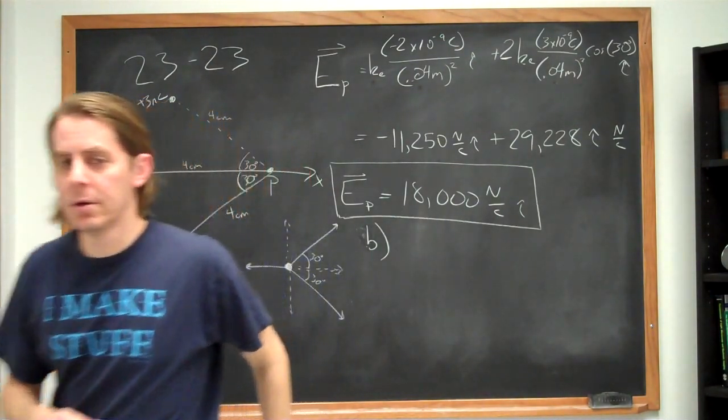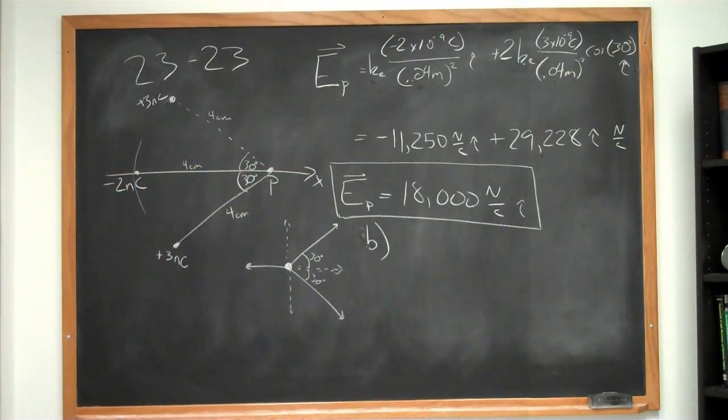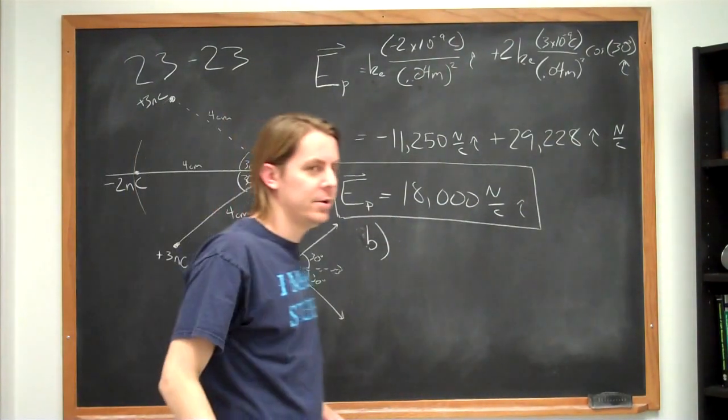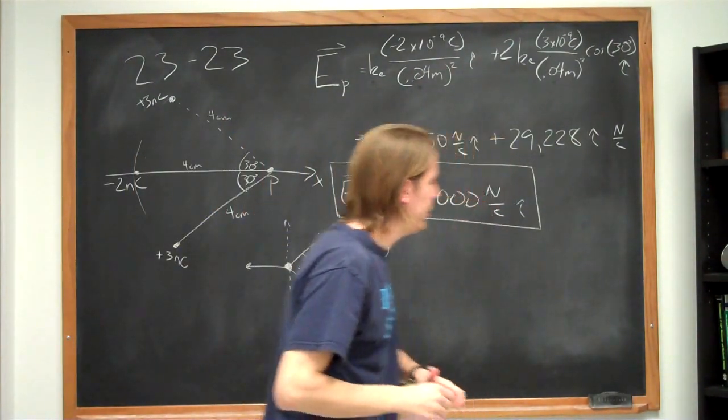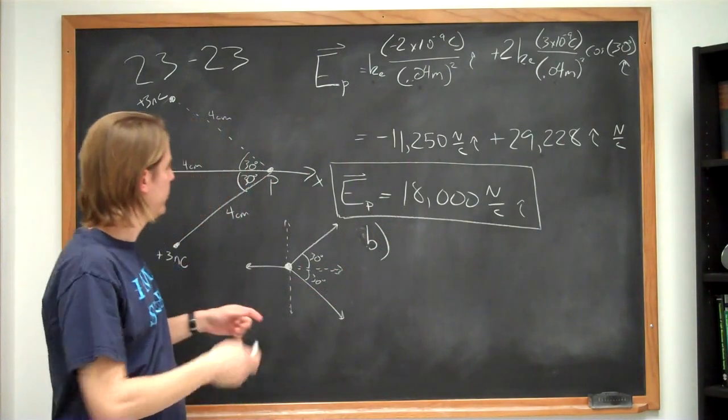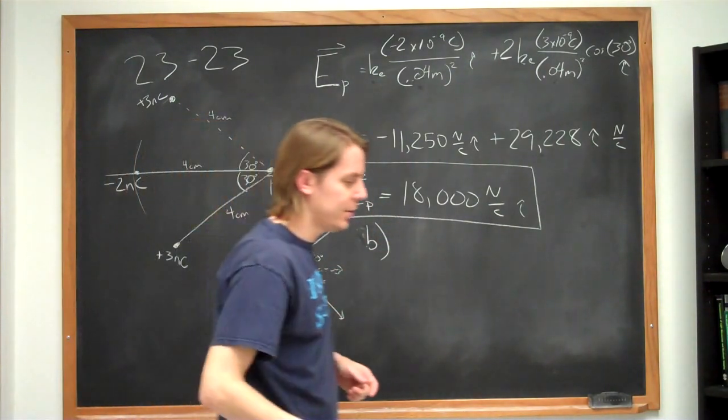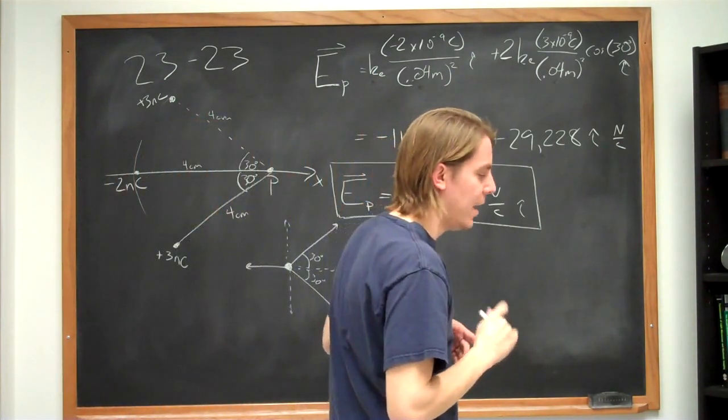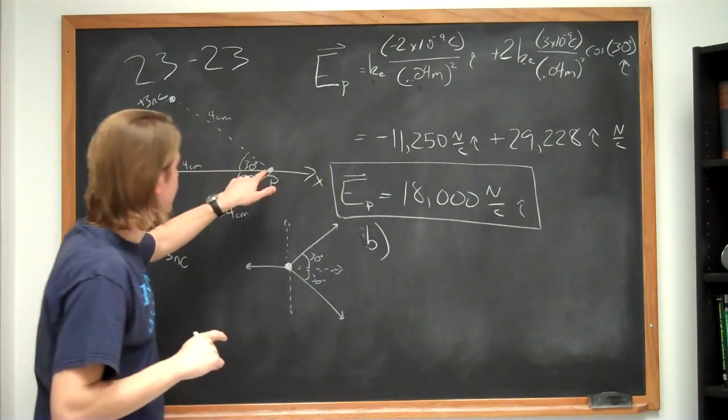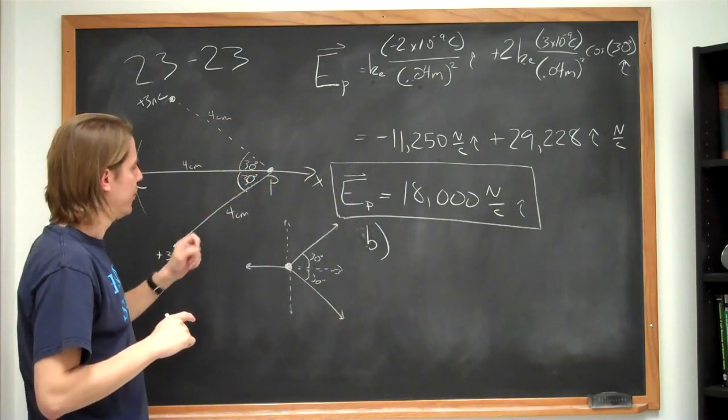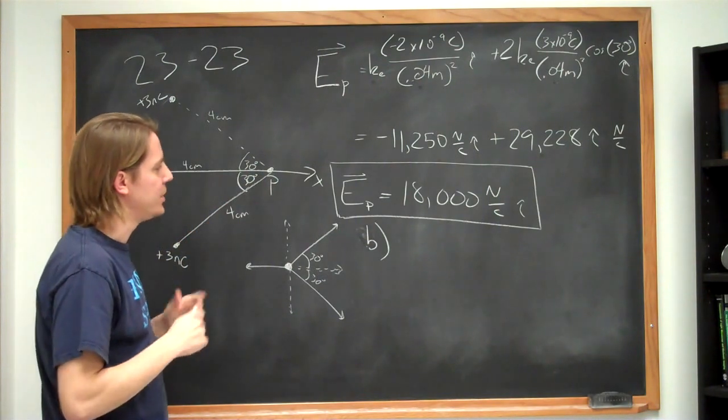Back. Battery died. Sorry about that. So we've calculated the electric field, 18,000 newtons per coulomb, to the right. And now the question is, if there is a negative 5 nanocoulomb charge put at point P, what will the force be on that charge?